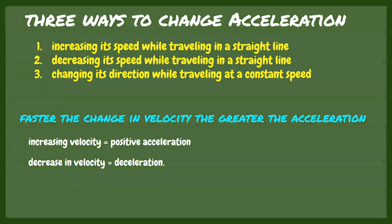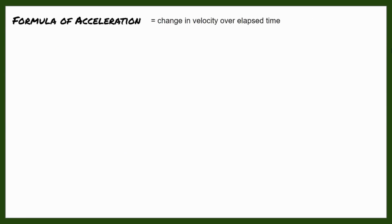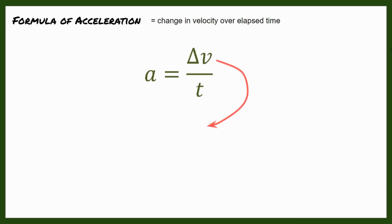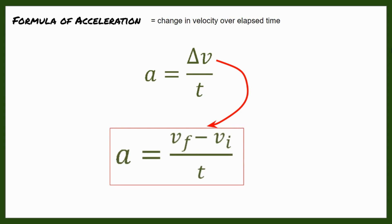We can solve for the average acceleration by using this formula: change in velocity over elapsed time. This is how you write the formula — A is equal to change in velocity (the triangle here means change in velocity) divided by time. So how can we find a change in velocity? We simply find the difference between the final velocity and the initial velocity.